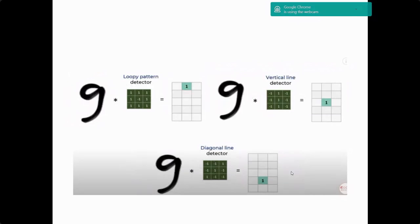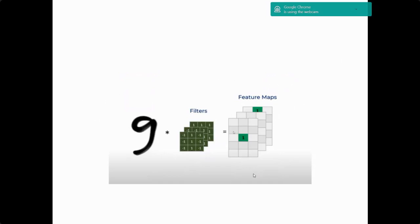We apply different filters to detect different features. For a vertical line detector, the center values are 1,1,1 surrounded by -1,-1. For a diagonal line detector, the values are arranged differently along the diagonal. We identify each of these patterns separately, and then stack the resulting feature maps together. This collection of feature maps from multiple filters is what we call the full feature map from the convolution operation.